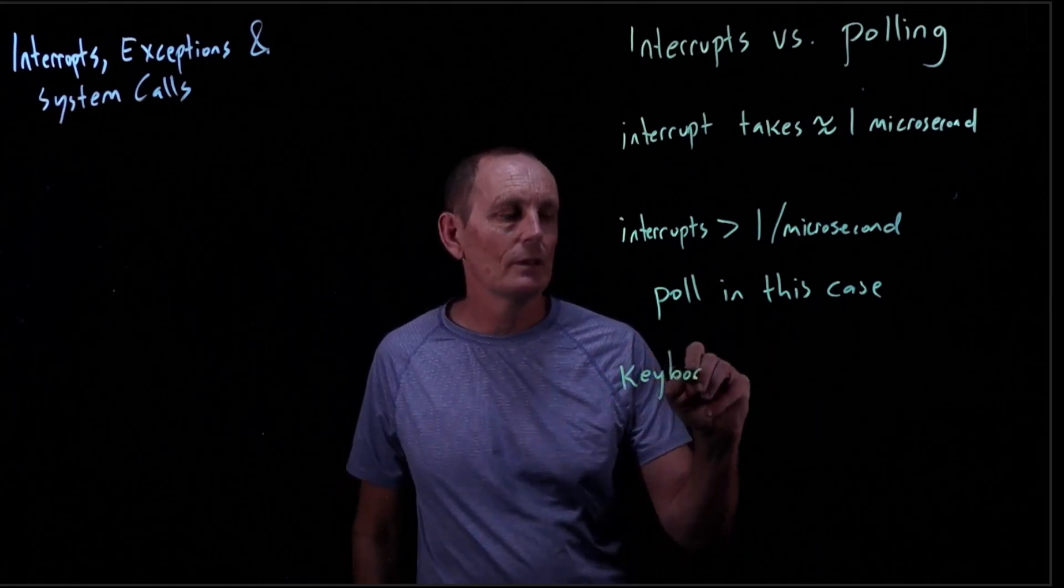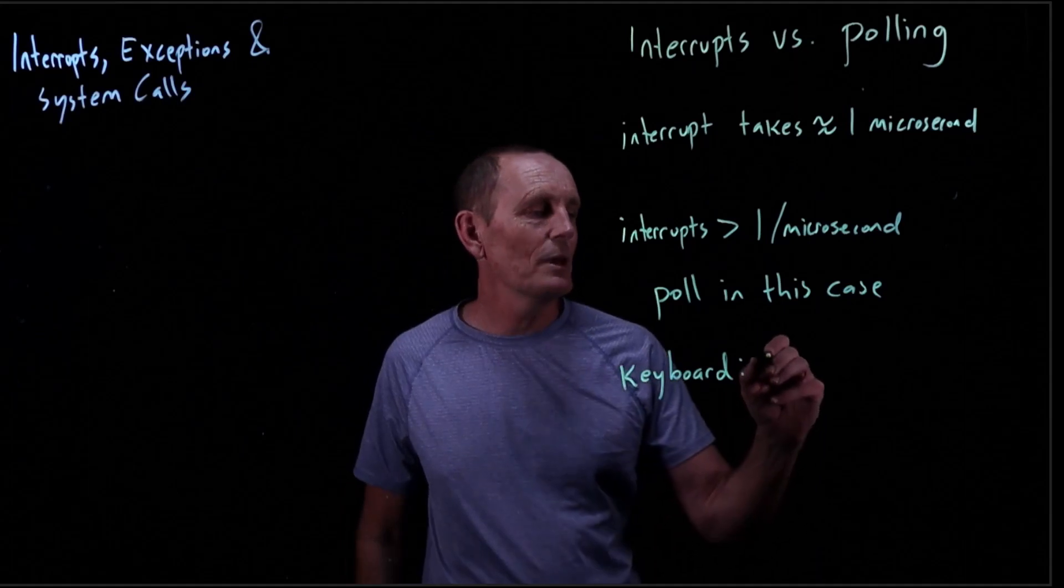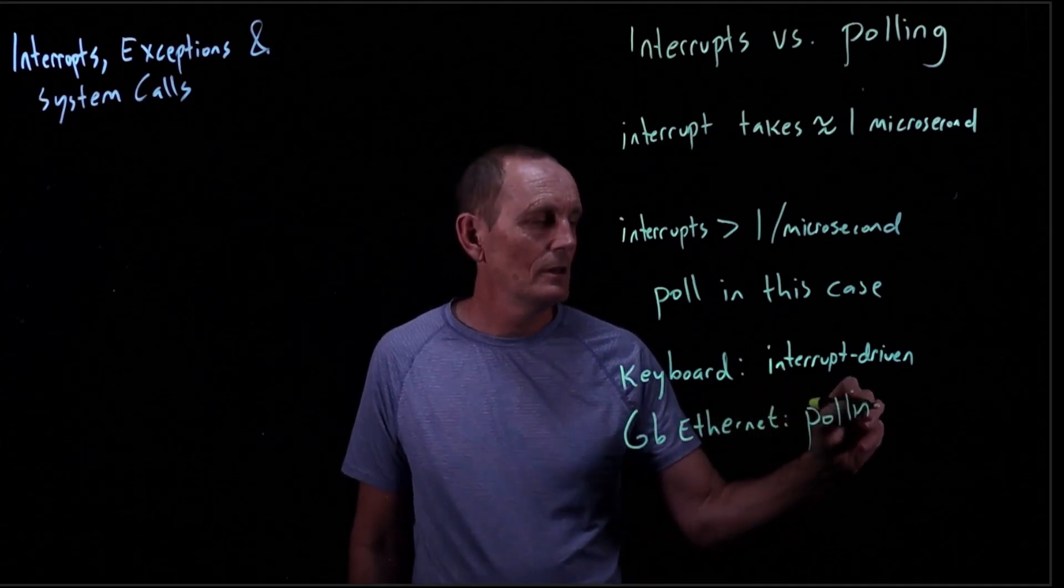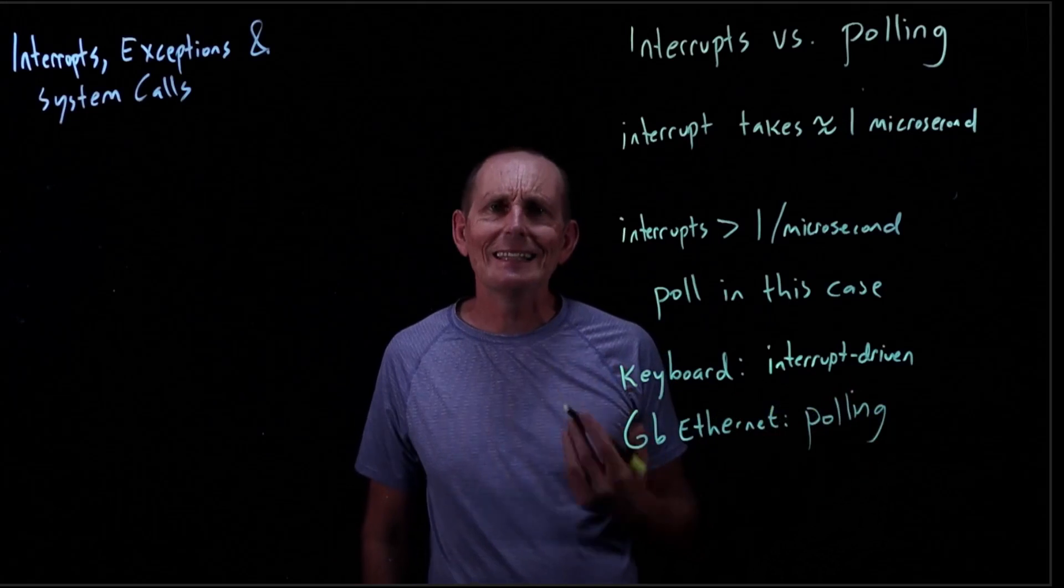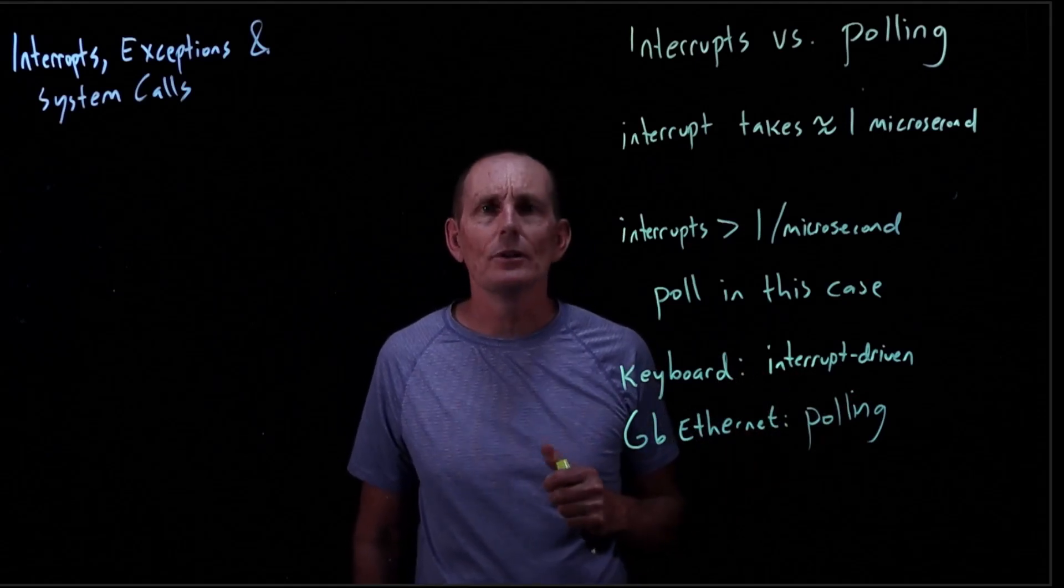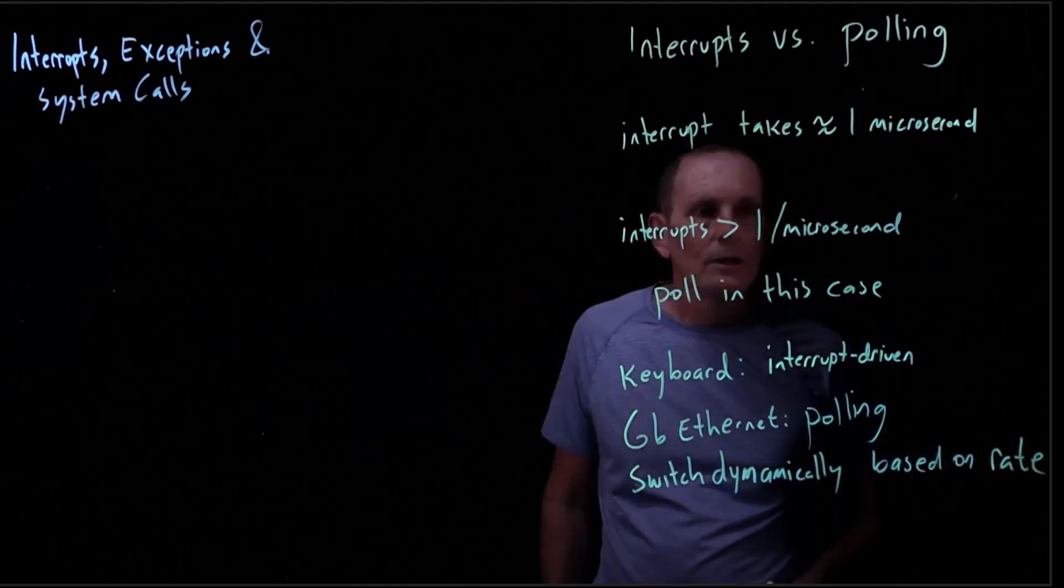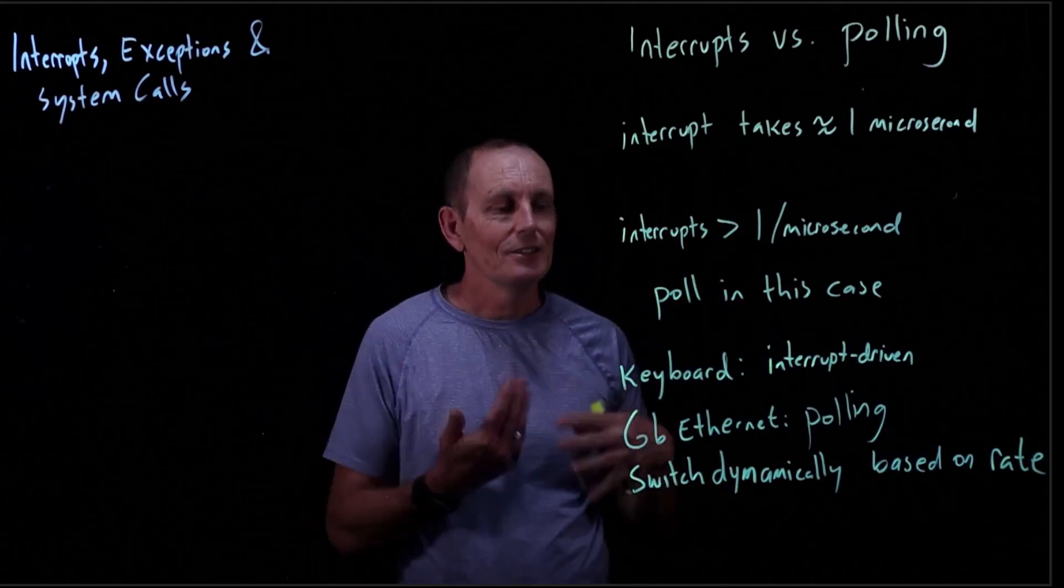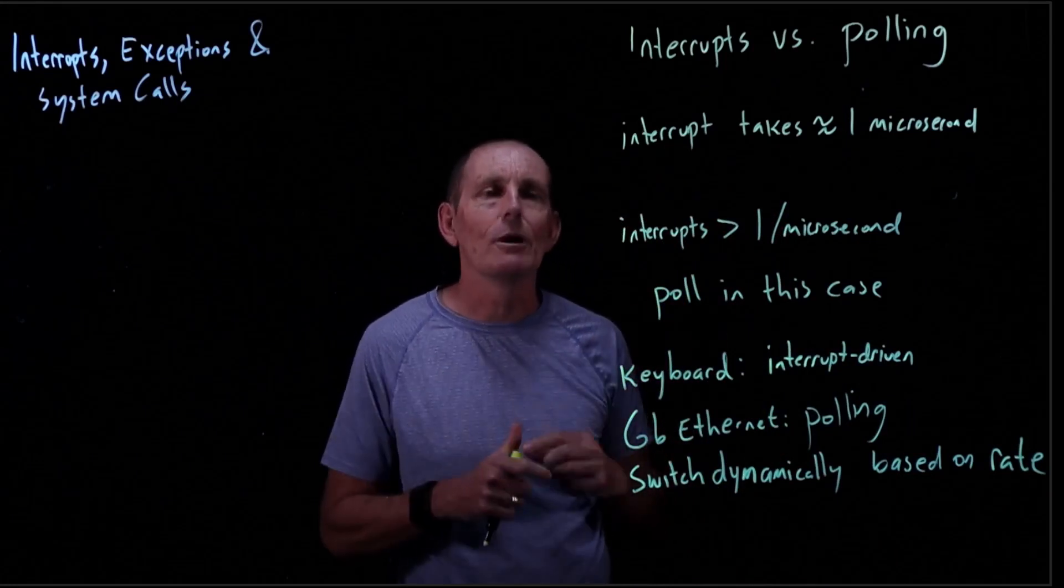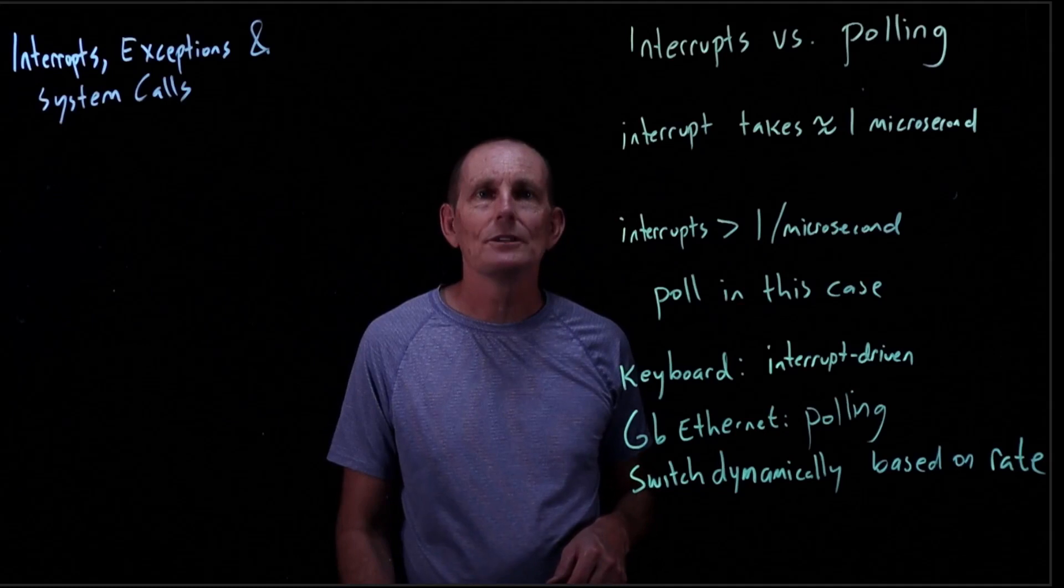Different devices may choose to do polling or interrupt. For instance, for a keyboard, you'd waste a lot of time polling because that doesn't happen very often. This would be better for interrupt driven. If you had gigabit ethernet generating data, this might be better suited for polling. If you've got no network traffic, it's kind of a waste to poll. What you might want to do is switch dynamically based on the rate. If you're getting a lot of interrupts, switch over to polling mode. If you're getting few interrupts, move back to interrupt mode. Look at that interrupt rate, and as the rate goes up, switch to polling. That's really what you need to know about interrupts.